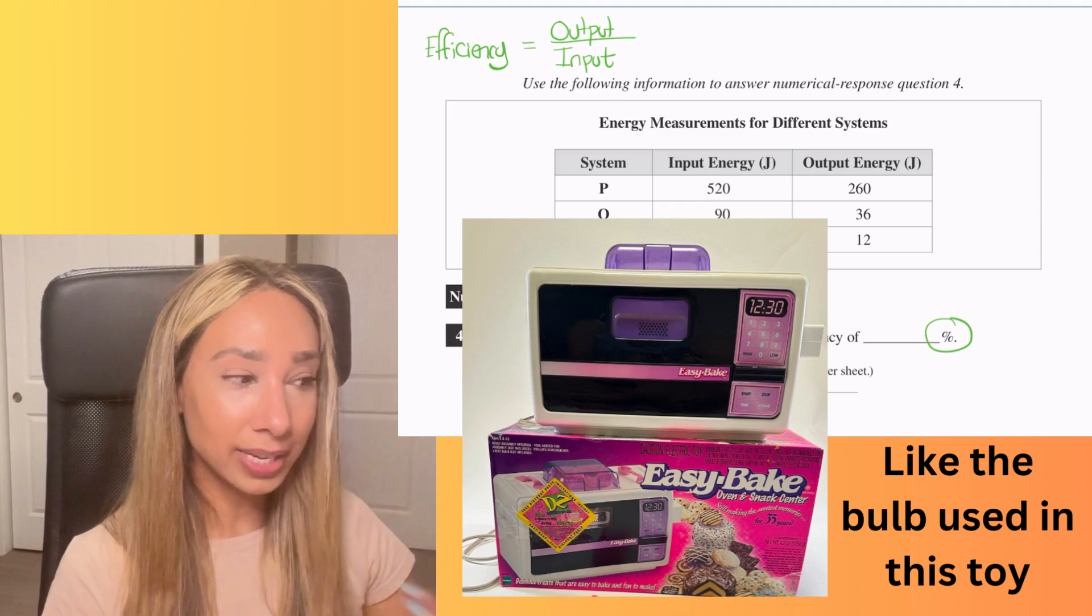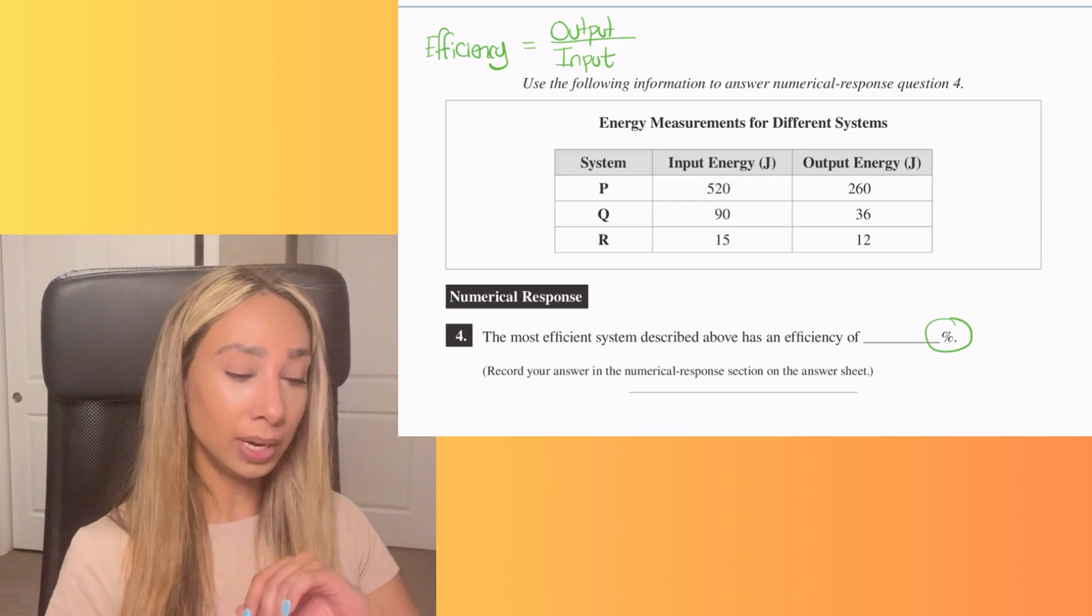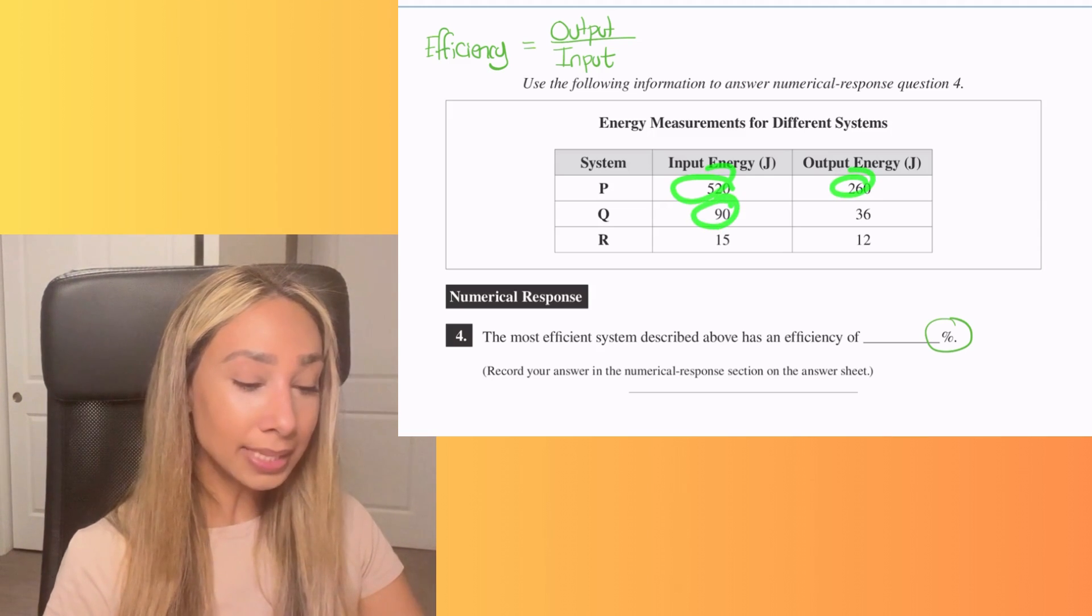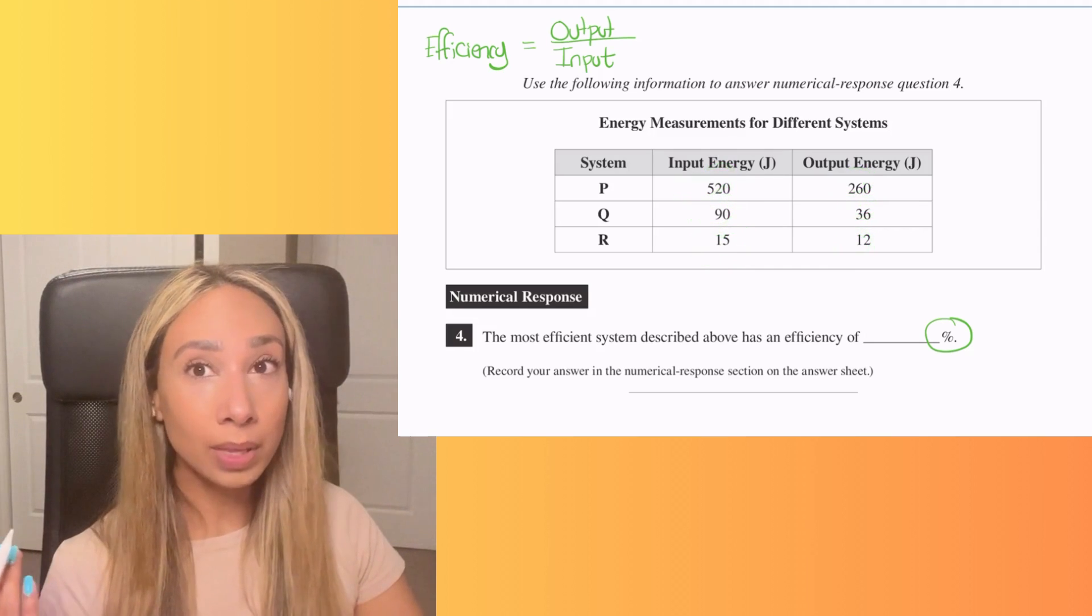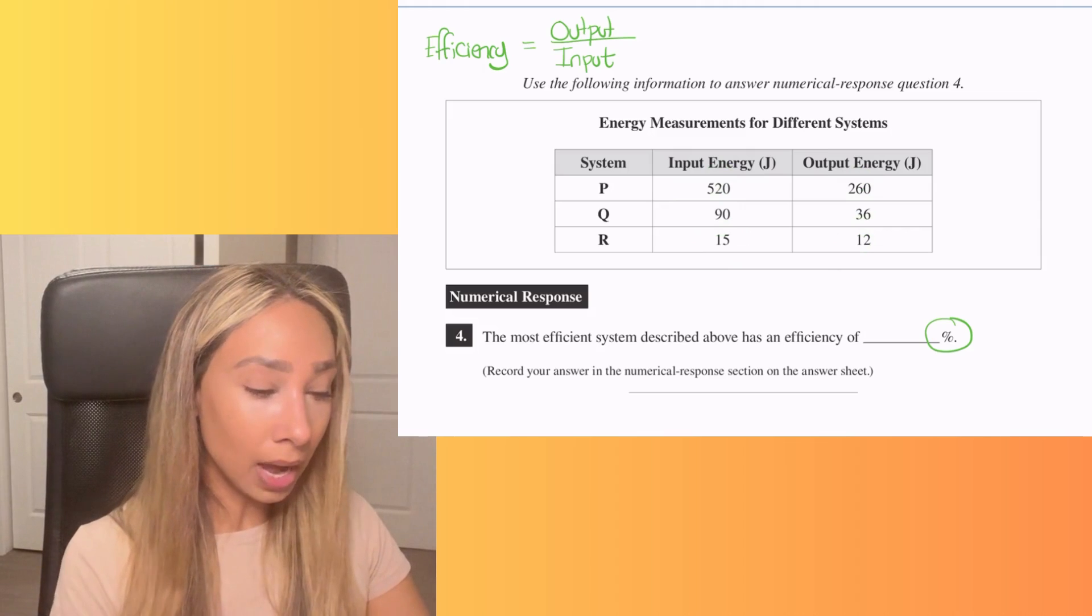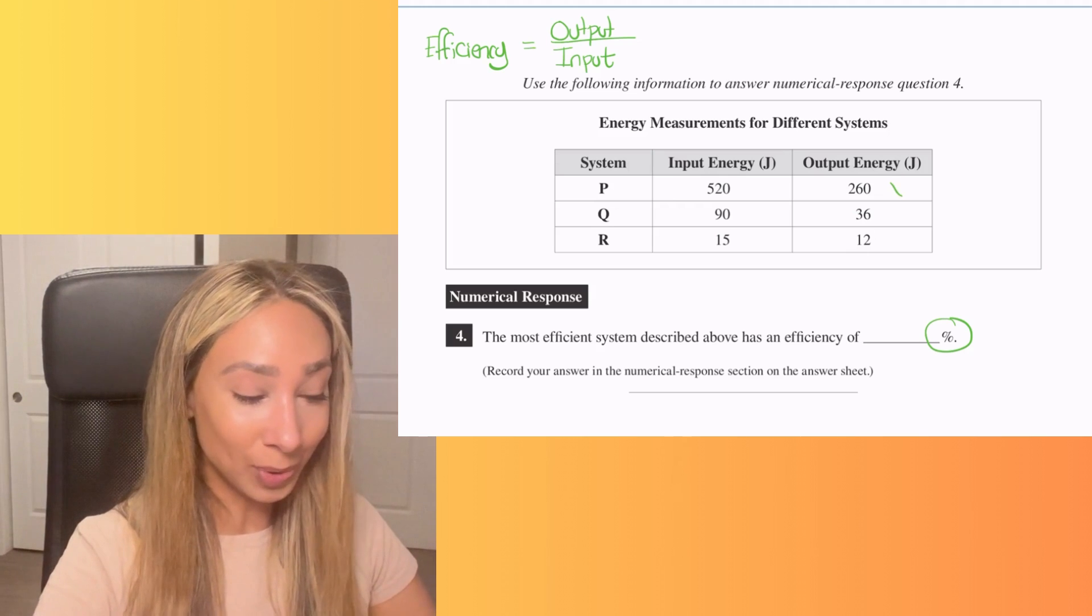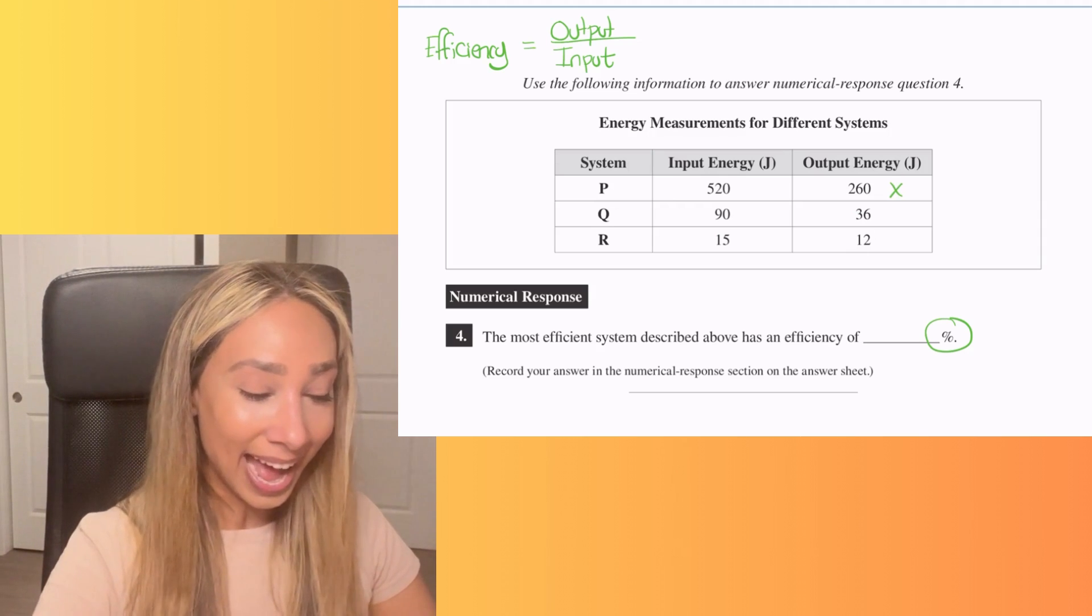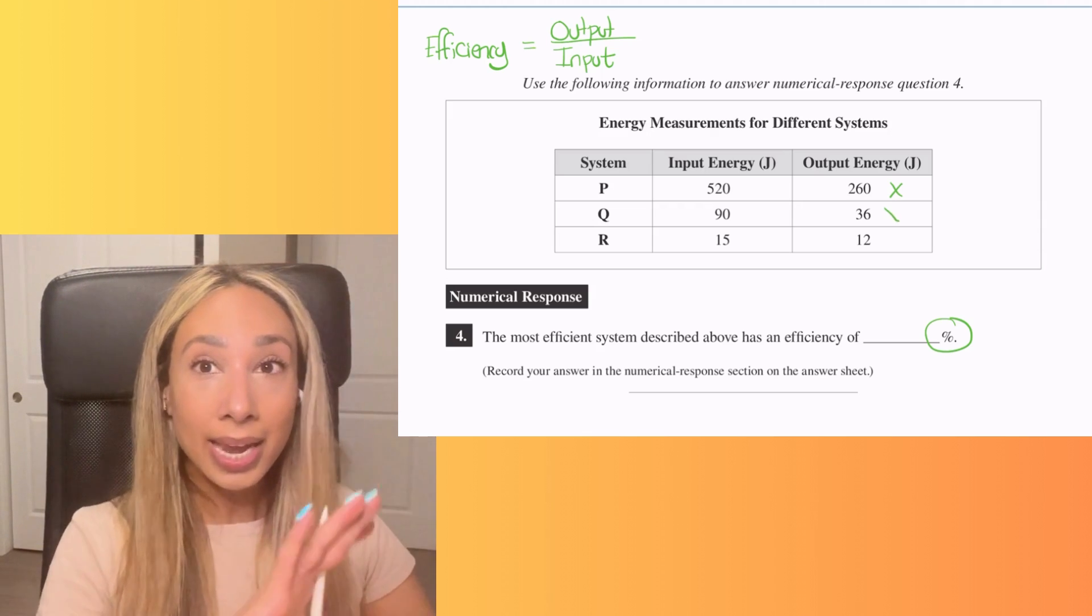So with this question, there is a little bit of a shortcut. So what you can do is you can look at the differences between these numbers and see which one actually has the smallest difference because that one would be the most efficient. So right now I can notice that this one here is about almost 200 off, 36 and 90, that's a little less than half. So those two aren't going to work.